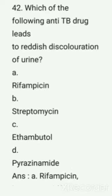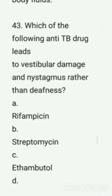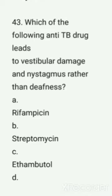Question number 42: Which of the following anti-TB drugs leads to reddish discoloration of urine? This is a repeated question. Options are: A) rifampicin, B) streptomycin, C) ethambutol, D) pyrazinamide. Correct answer: option A — rifampicin, because it diffuses into body fluids.